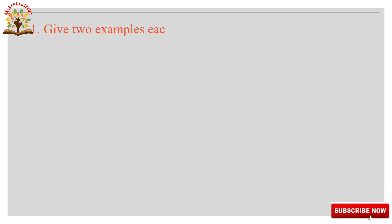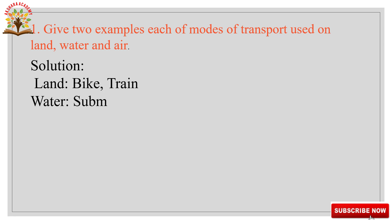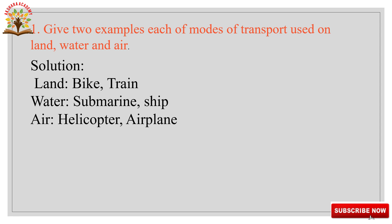Question 1: Give 2 examples each of modes of transport using land, water, and air. Solution — Land transport: bike, train. Water transport: submarine, ship. Air transport: helicopter, aeroplane. These are all the examples of each mode of transport.